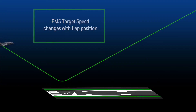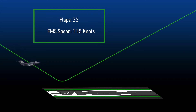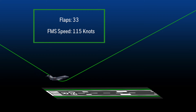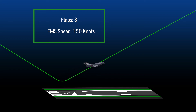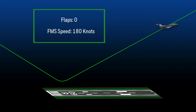In the event of a go-around, the FMS target speed also changes with flap position. During the initial go-around with the flaps at 33, the FMS target speed is 115 knots. As the flaps are retracted, the target speeds increase up to 180 knots with flaps 0. As always, the pilot can select a manual speed at any time.